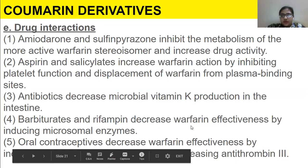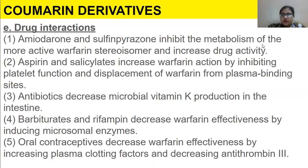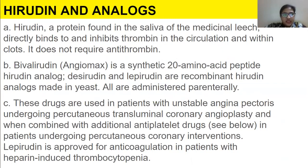We were talking about how oral contraceptives decrease their effectiveness by increasing plasma clotting factors and decreasing antithrombin 3. Now we have the other class, which is hirudin and analogs.